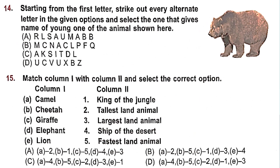Question 14: Strike out every alternate letter starting from the first letter to get the young one of the animal shown — a bear. The young one of a bear is called a cub. Doing this for each option: A gives lamb, B gives calf, C gives kid, D gives cub. The right answer is Option D.